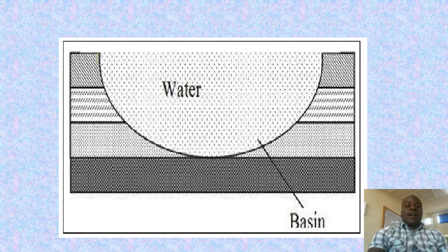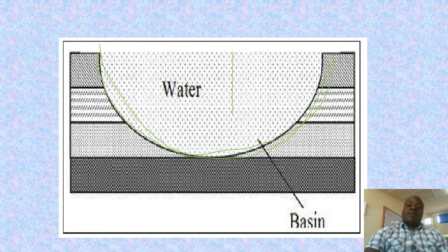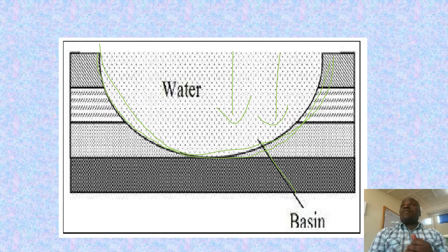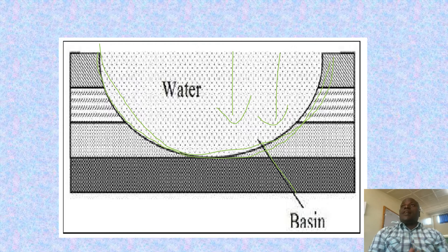Here is an illustration of a U-shaped depression or a basin — this is how it looks like. This is a basin formed as a result of down warping. And when it is filled with water, it forms a basin lake. Examples of basin lakes in Africa include Lake Chad, Lake Victoria, and Lake Muhazi.